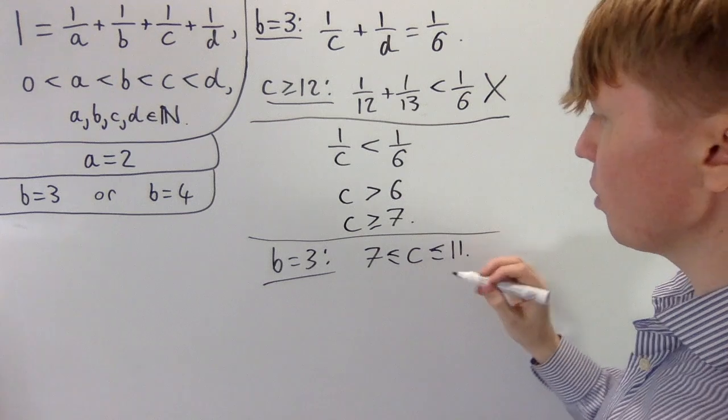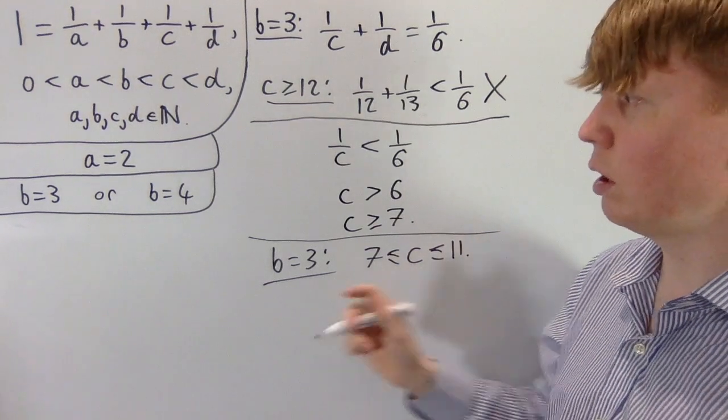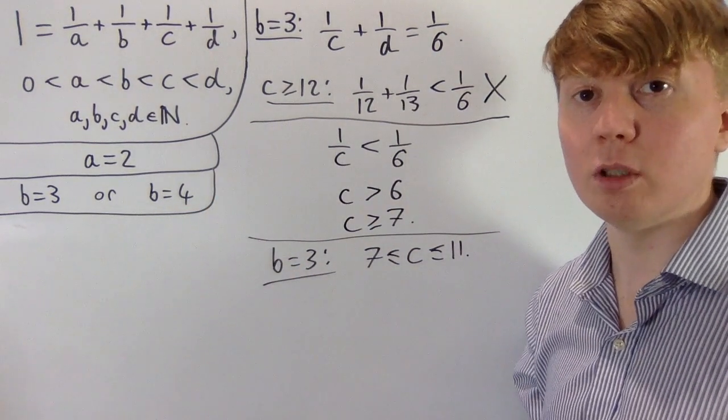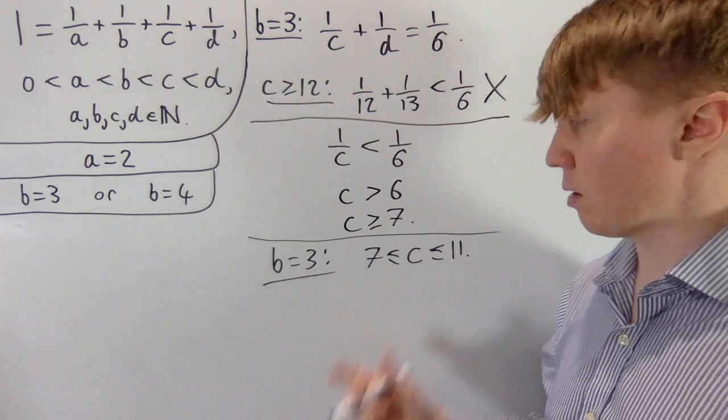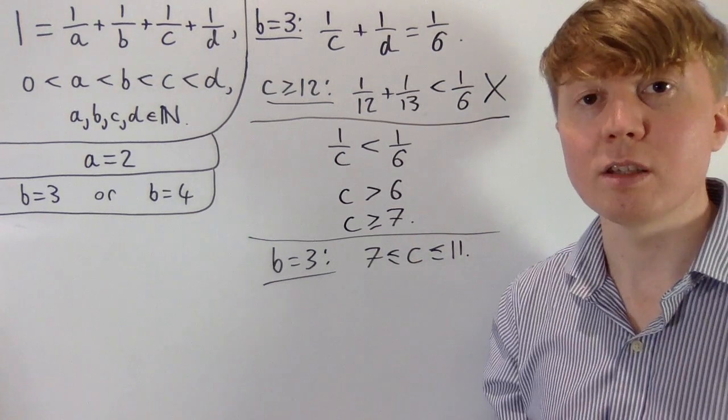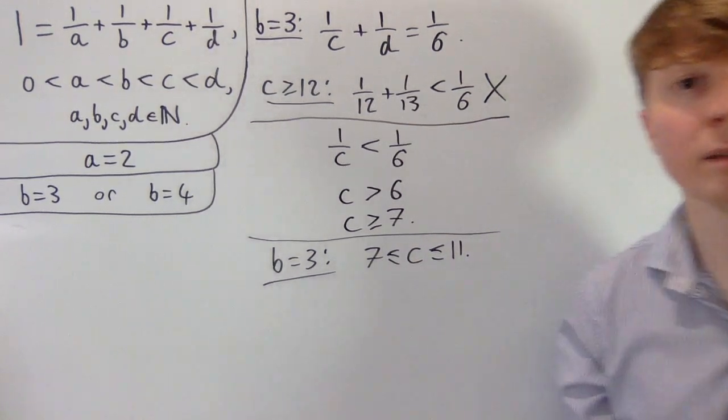We'll also find a lower bound on c. Since one over c plus one over d equals one sixth, one over c must be strictly less than one sixth, which means c must be strictly greater than six — so c is greater than or equal to seven, since it's a positive integer. So in the case where b is three, c must lie between seven and eleven. We'll deal with the values of d shortly, but first let's consider the case where b is four.